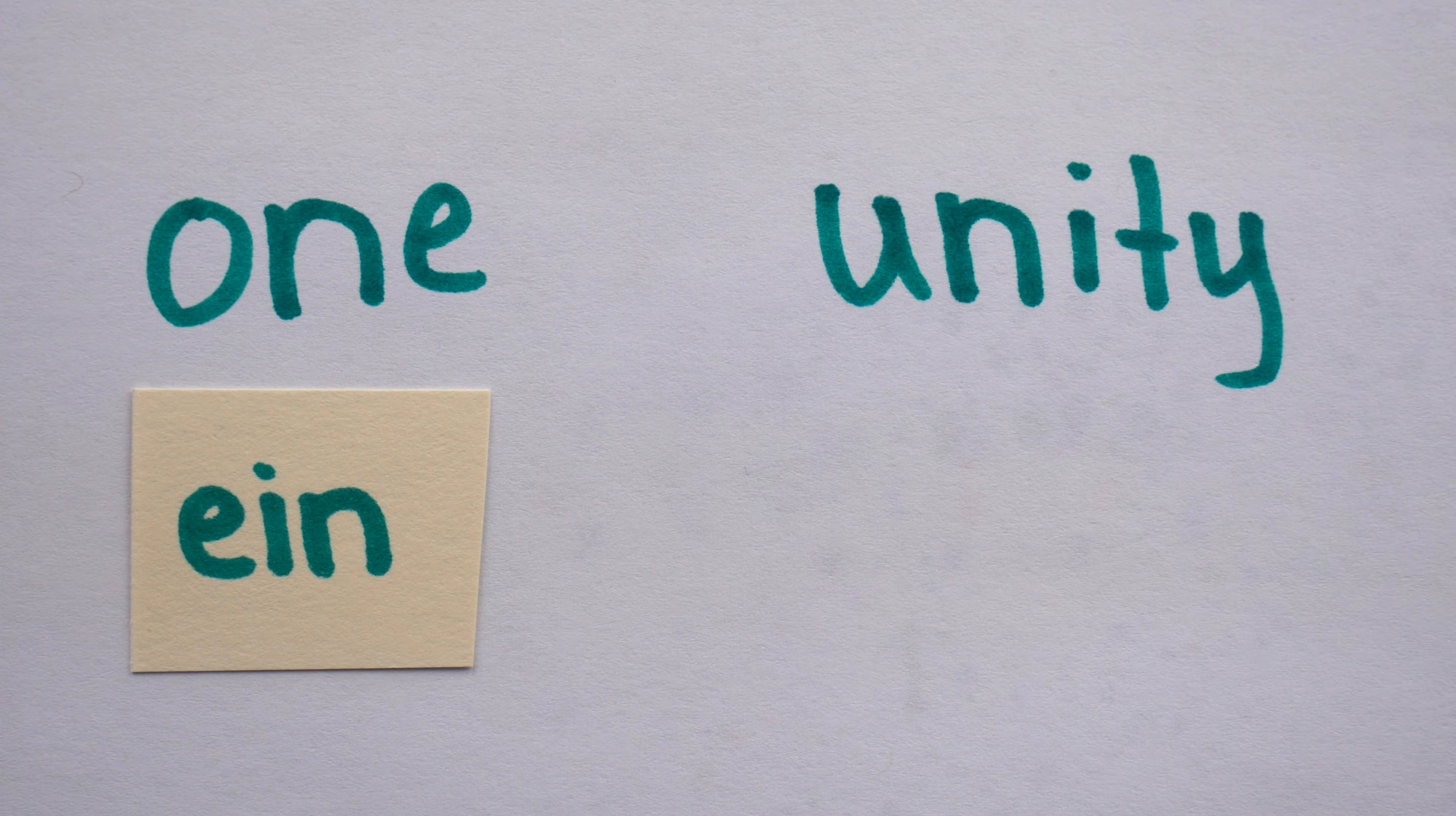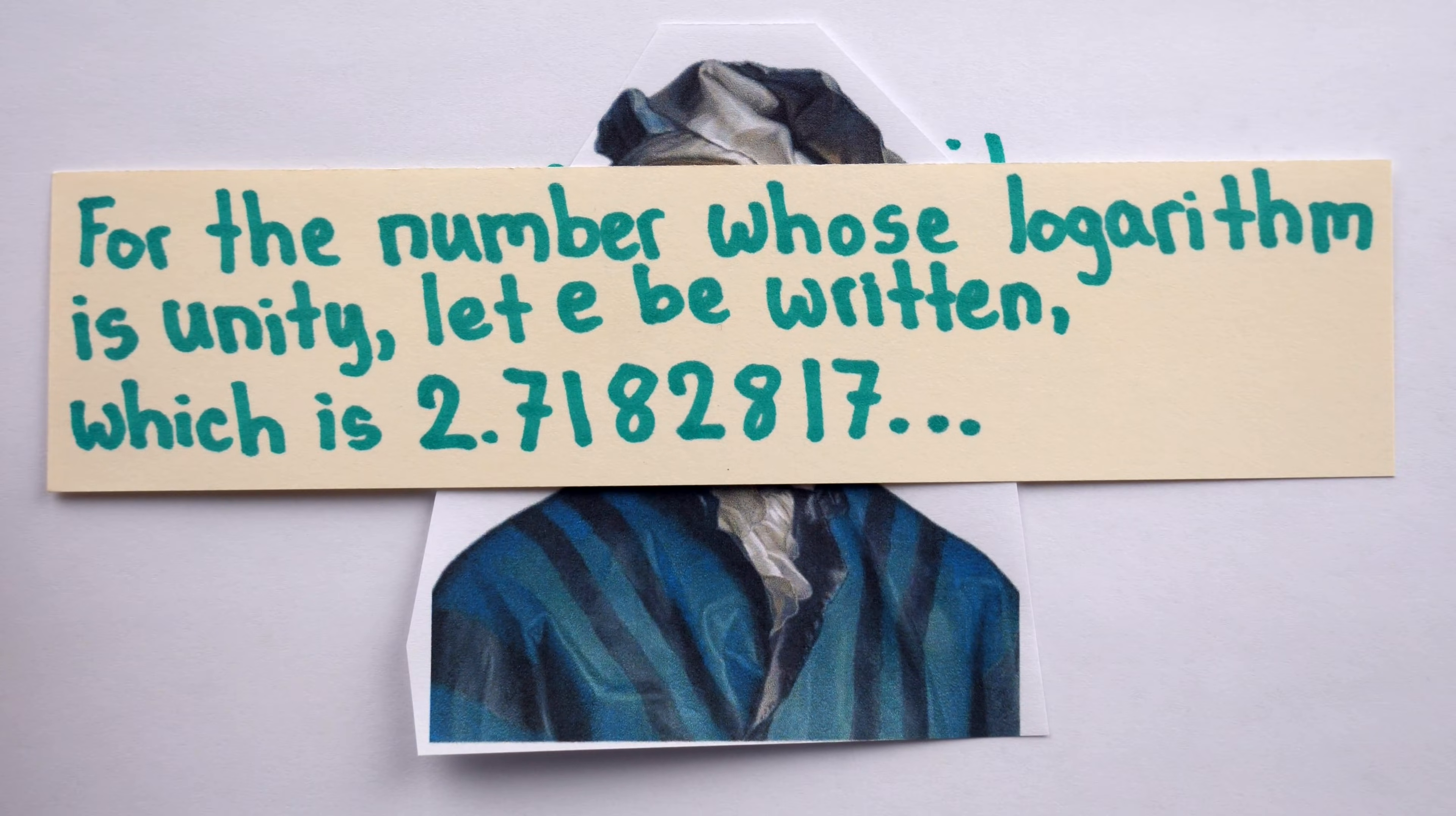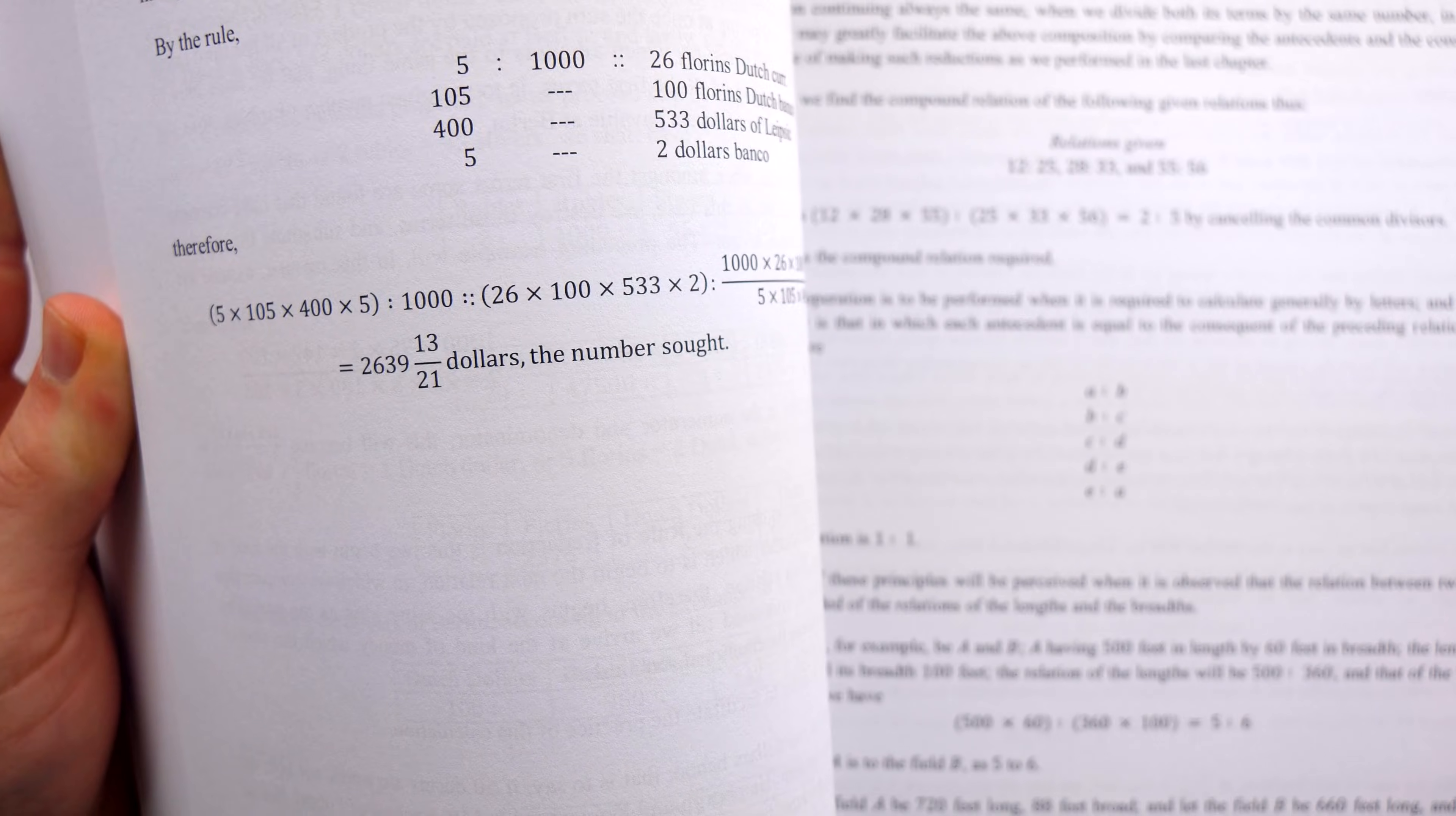Still, another possibility is that E is the first letter of one and unity in German. This is relevant to the way Euler actually first defined E, not in 1736, but in an unpublished manuscript from 1727, in which Euler says, for the number whose logarithm is unity, let E be written, which is this. Although this manuscript was written not in German, but Latin, where the words for one and unity are unis and utatum. But Euler did sometimes write in German. His elementary algebra book was originally written in German, for example.